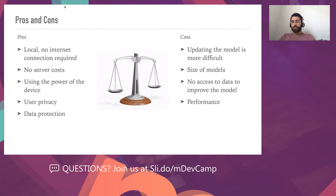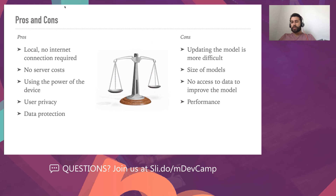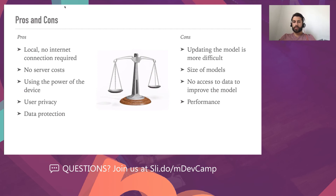The cons: updating the model is more difficult. Core ML has some ways to personalize and update the model, but it's challenging because you don't have access to user data to improve the model online. The model size is quite large, though I'm sure this will be reduced over time. And performance — you may have noticed it takes around two to three seconds per response, and with bigger documents that could be more. You can optimize with search techniques, but it will likely still be slower than using a web server.